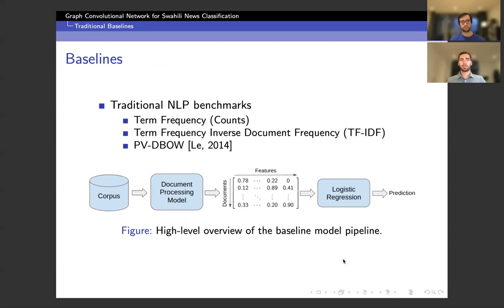The best way to think about our baseline pipeline is to look at the figure in the bottom of our slide where we have our high-level overview. If you look from the left-hand side, you see we take the corpus and pass it through one of these three traditional NLP models, which form a document processing stage. This allows us to extract a feature set for each document, which we can then pass through a logistic regression layer to get our categorization prediction.